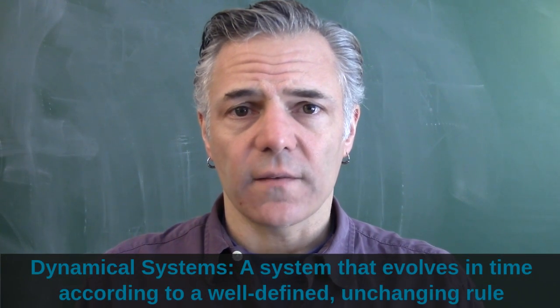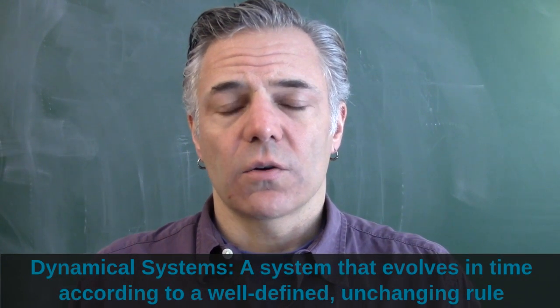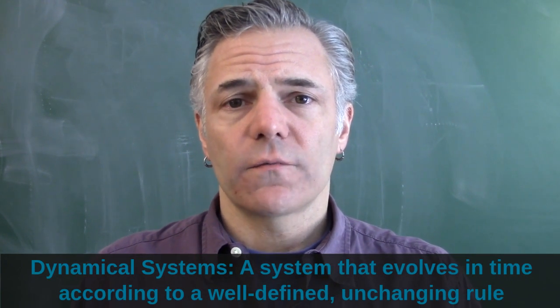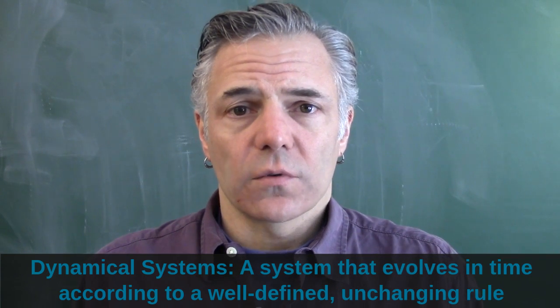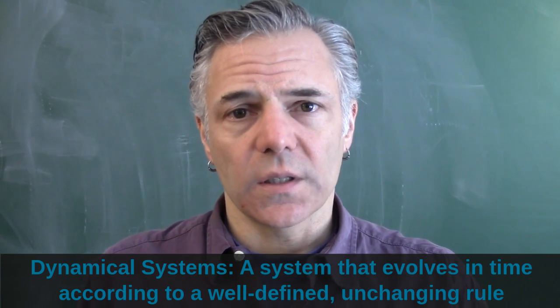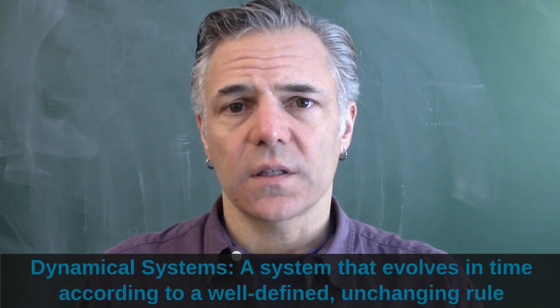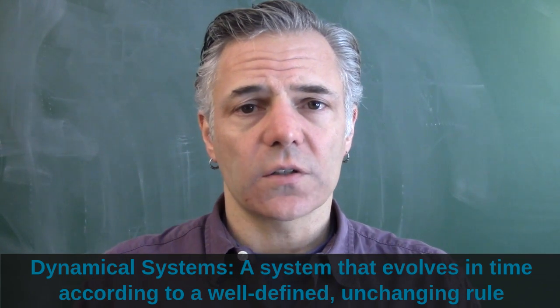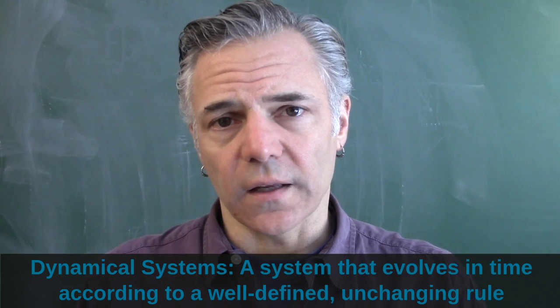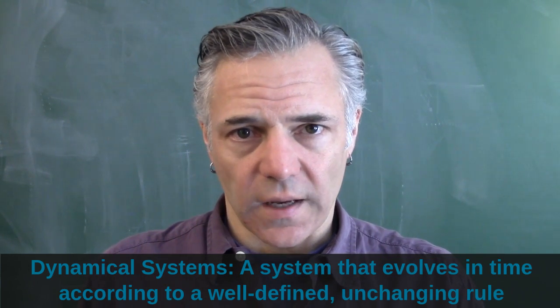And I'll come back to this again. But for now, a dynamical system is a system that evolves forward in time according to a well-defined and unchanging rule. And that's what we have with iterated functions. So we have a value, a number, that moves forward, changes from iterate to iterate according to a well-defined rule. That's the function, a nice deterministic function. The same input gives the same output every time, and the rule doesn't change as we iterate. We're just doing the same thing over and over again, using the output of one step for the input of the next.